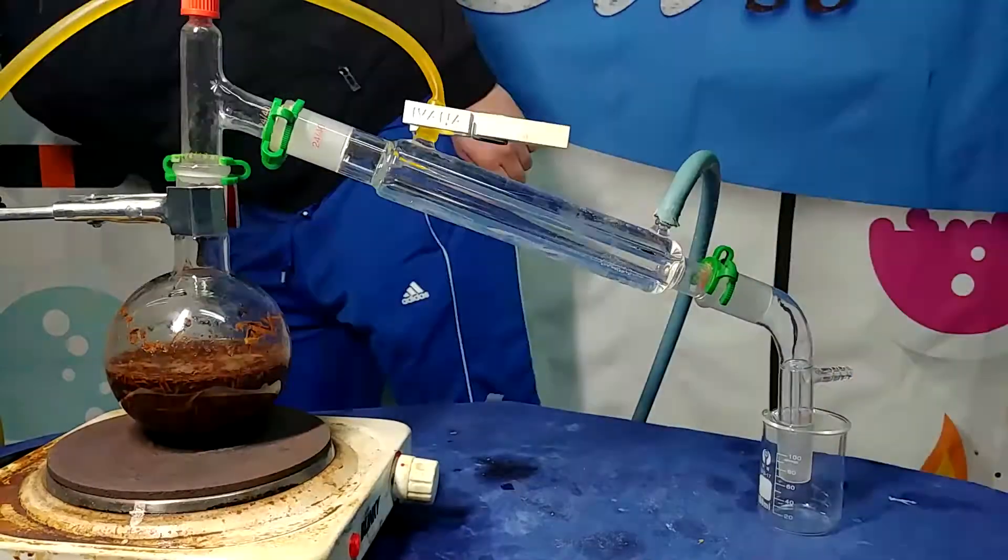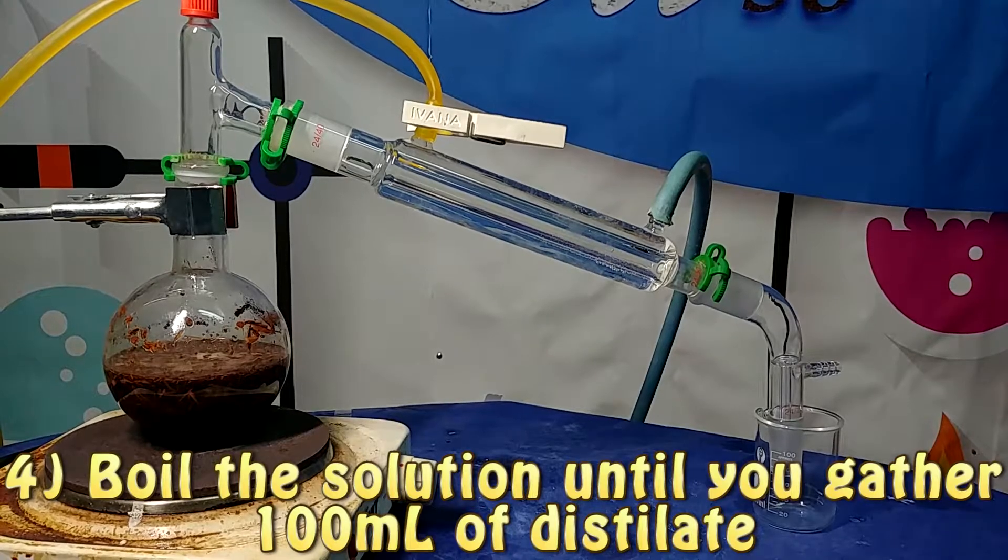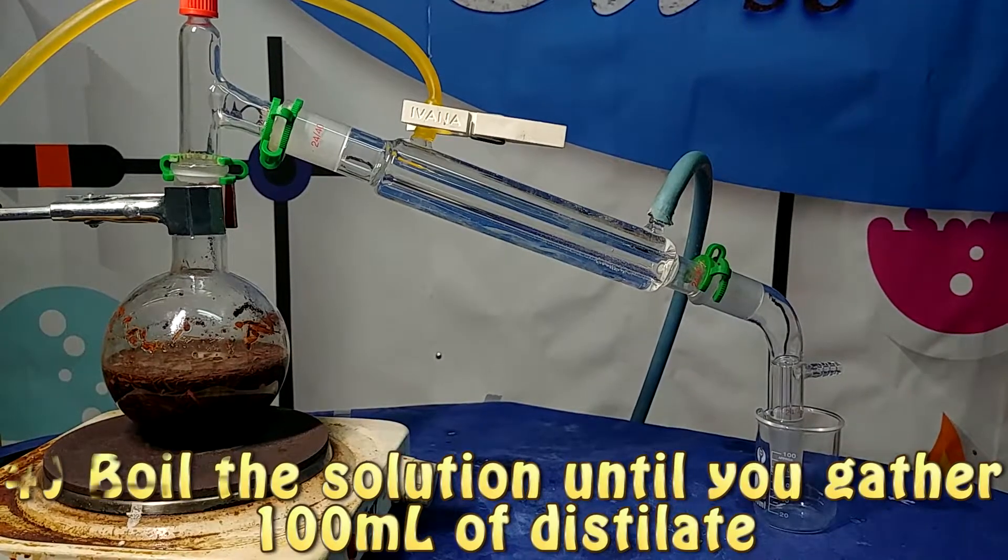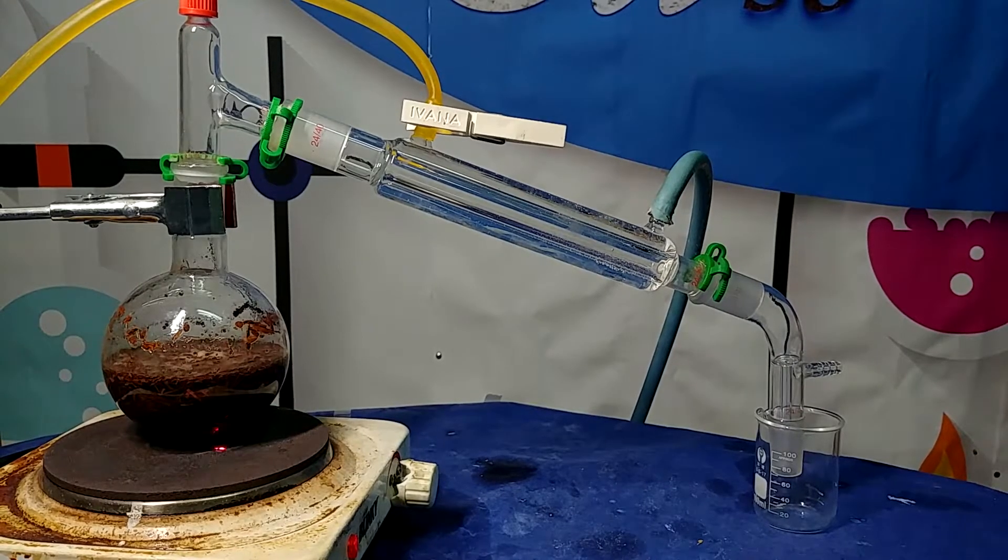So next we are going to boil this solution until we obtain 100 ml of distillate. Then we are going to put this aside and add 100 ml of water to our boiling flask.